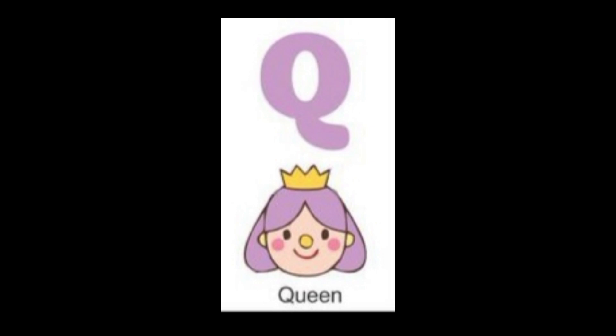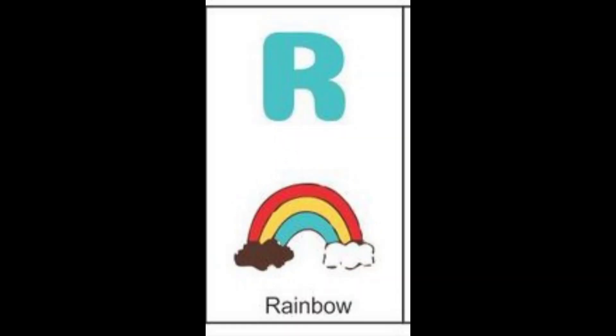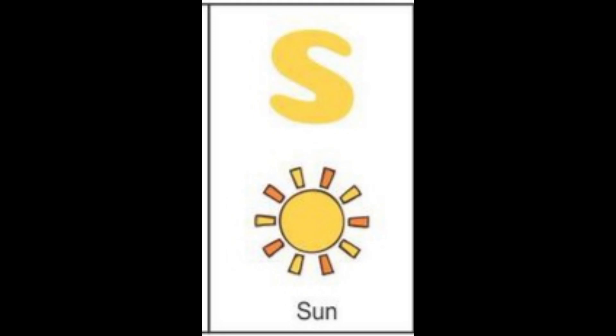The next letter is Q. Q for queen and the color of queen is purple. The next letter is R. R for rainbow and the color of rainbow is aqua.